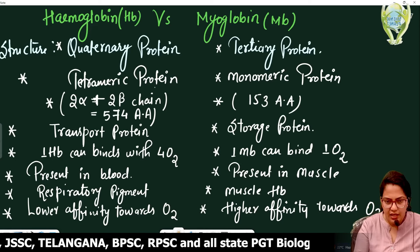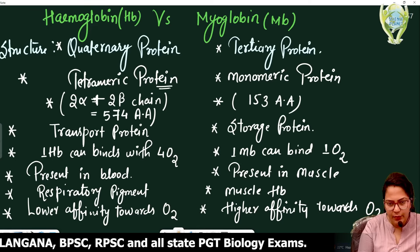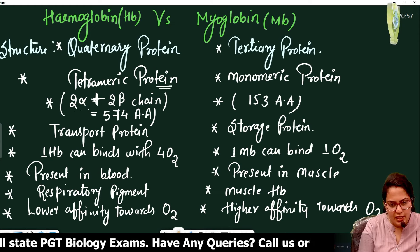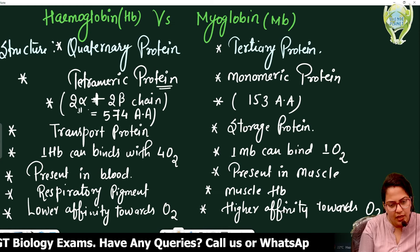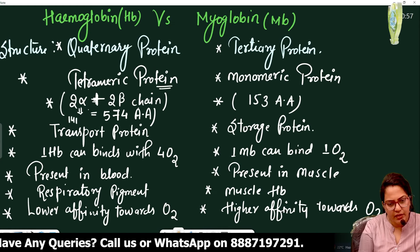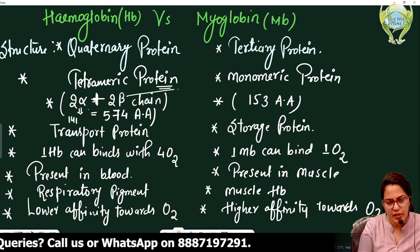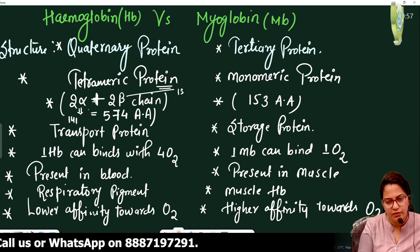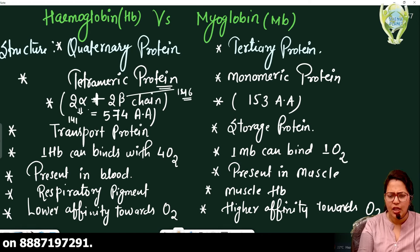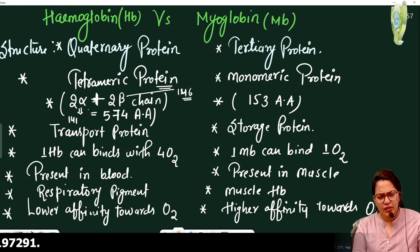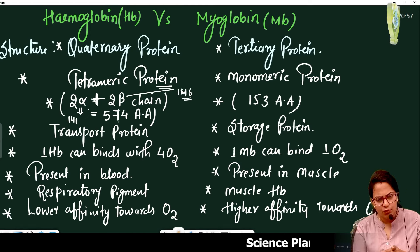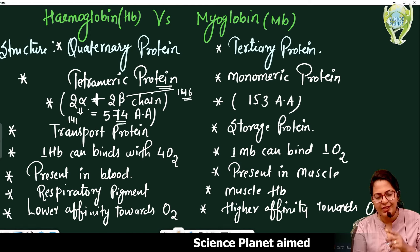Hemoglobin is tetrameric — it has 2 alpha and 2 beta chains. One alpha chain has 141 amino acids and one beta chain has 146 amino acids. So 2×141 plus 2×146 gives a total of 574 amino acids in hemoglobin.